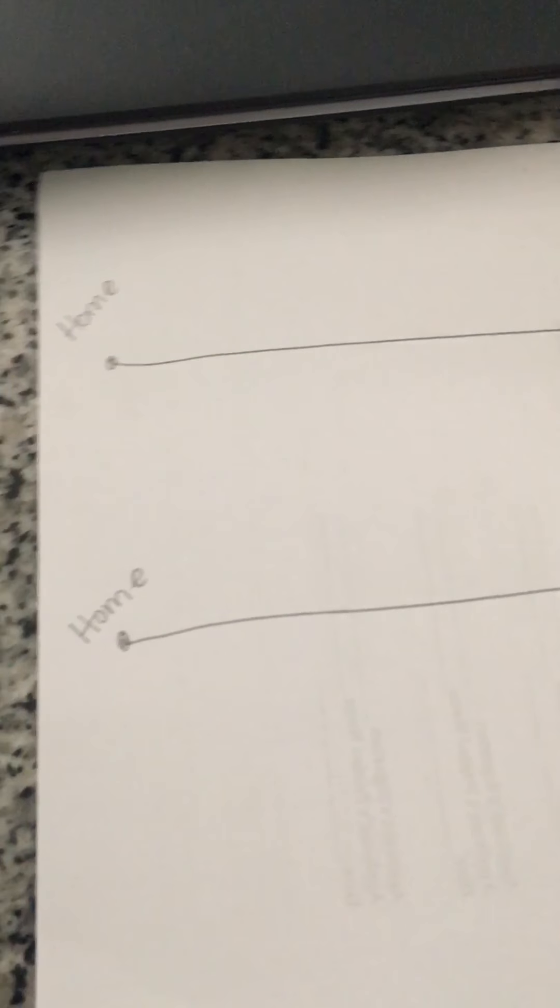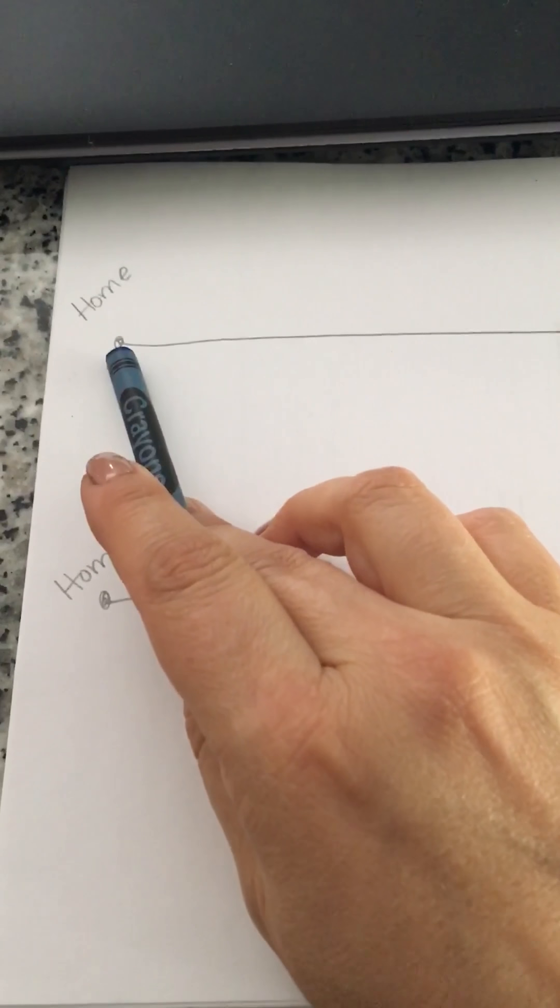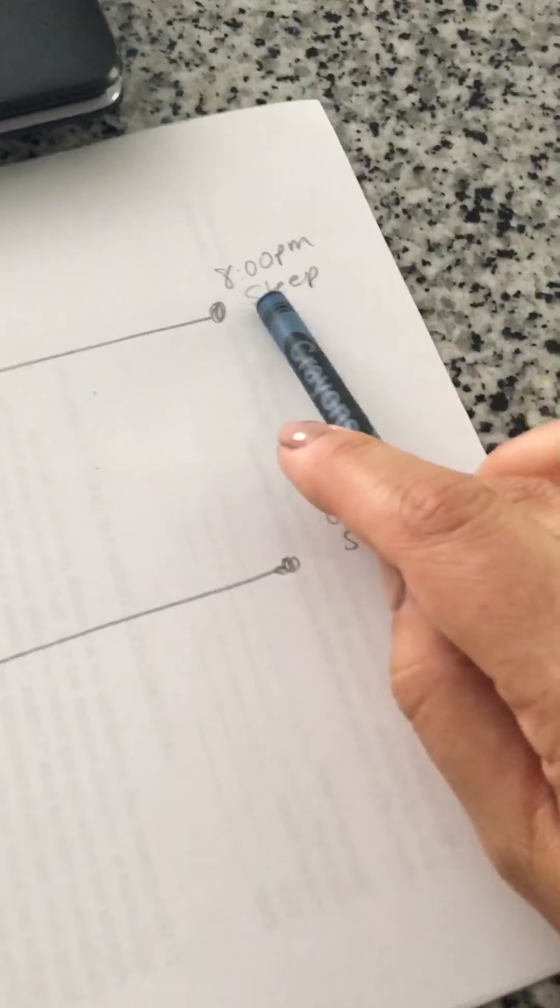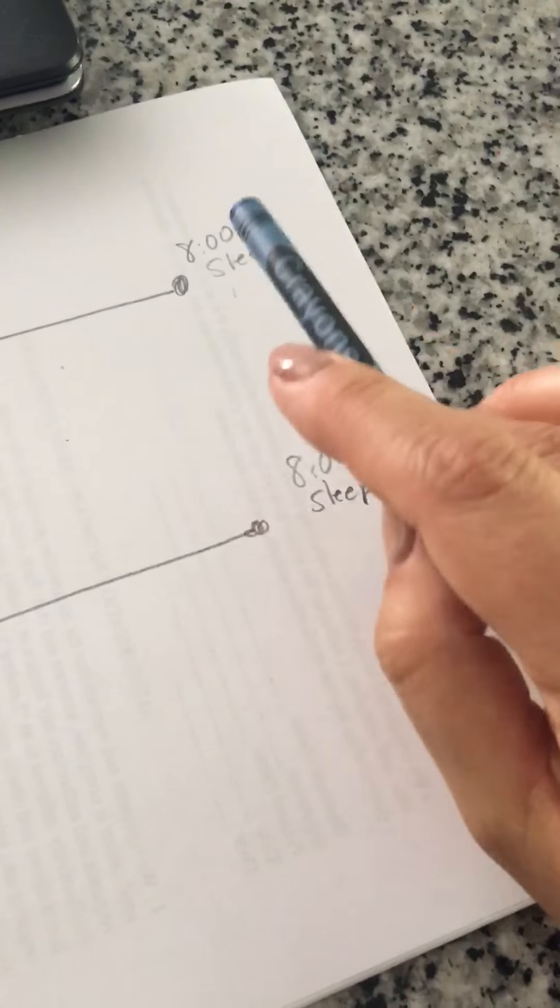So this right here I made like a diagram and I can't find the one that I actually made, but if you look at my Instagram you can actually see the actual one that I made. This one I'm making for you guys. So I told him this point right here is when you get home from school. This point right here is bedtime, 8 o'clock p.m. every single day.